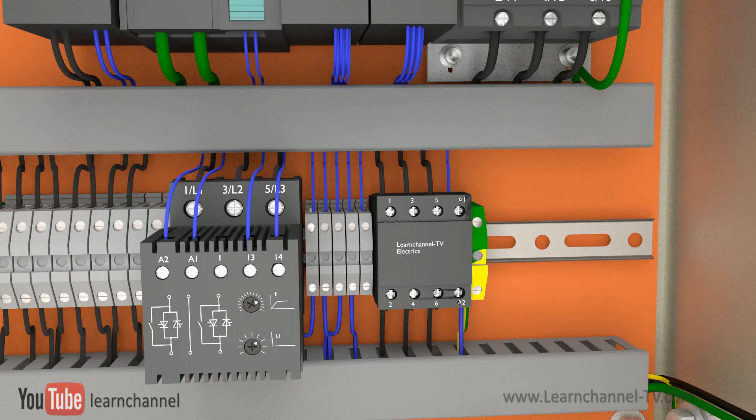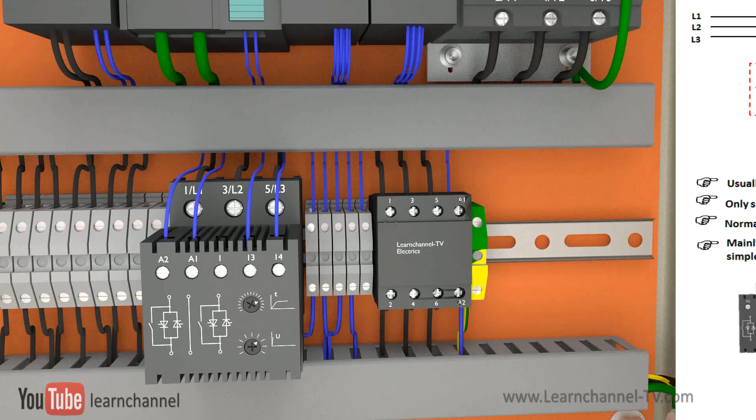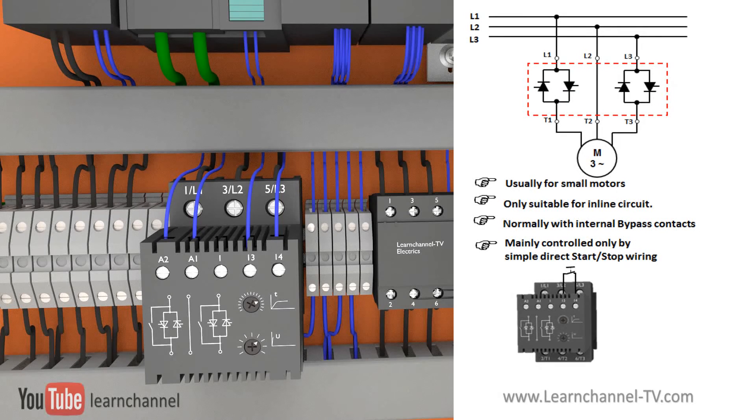The two-phase controlled soft starter is the cheaper alternative used for smaller three-phase motors. Because only two phases are phase controlled, the resulting rotating field is elliptical during starting and braking, what you also can hear by the sound of the motor.